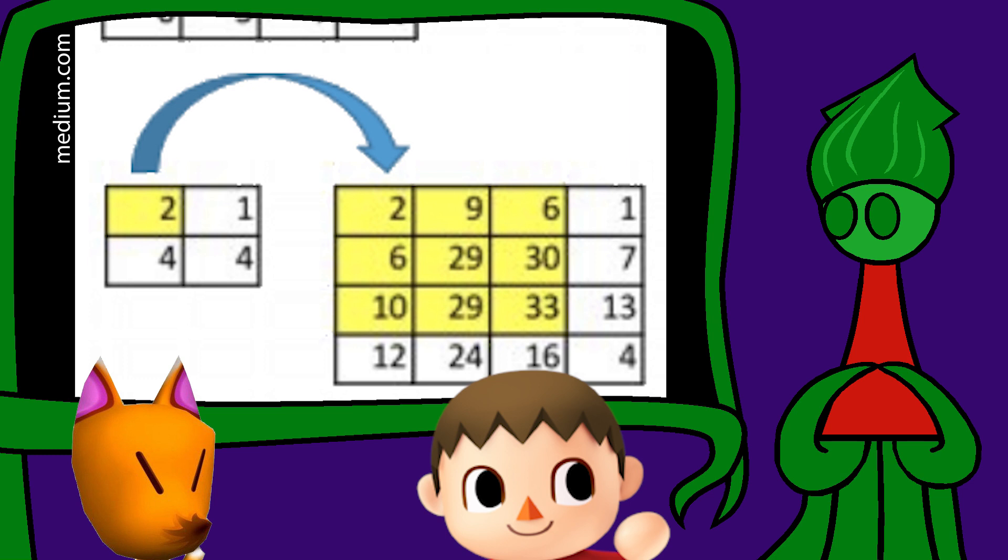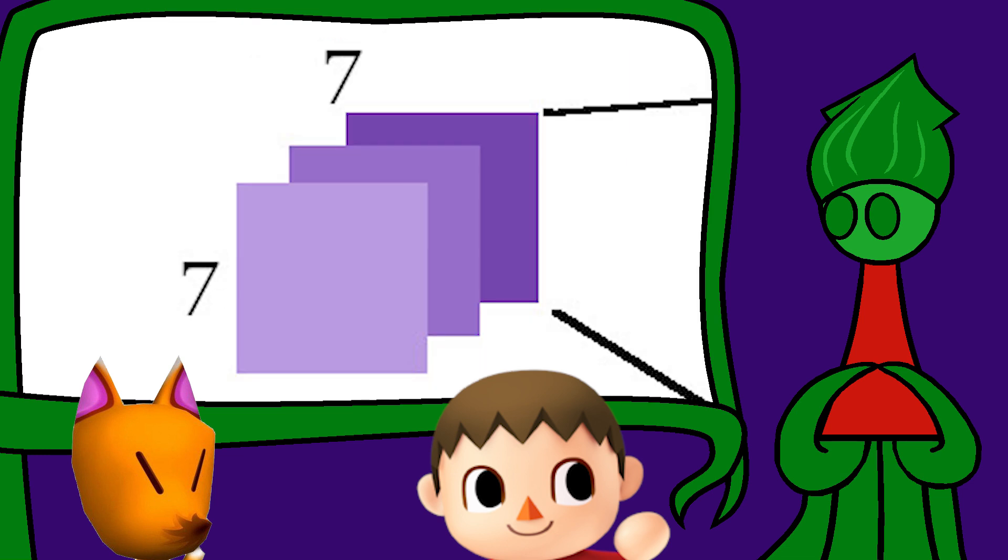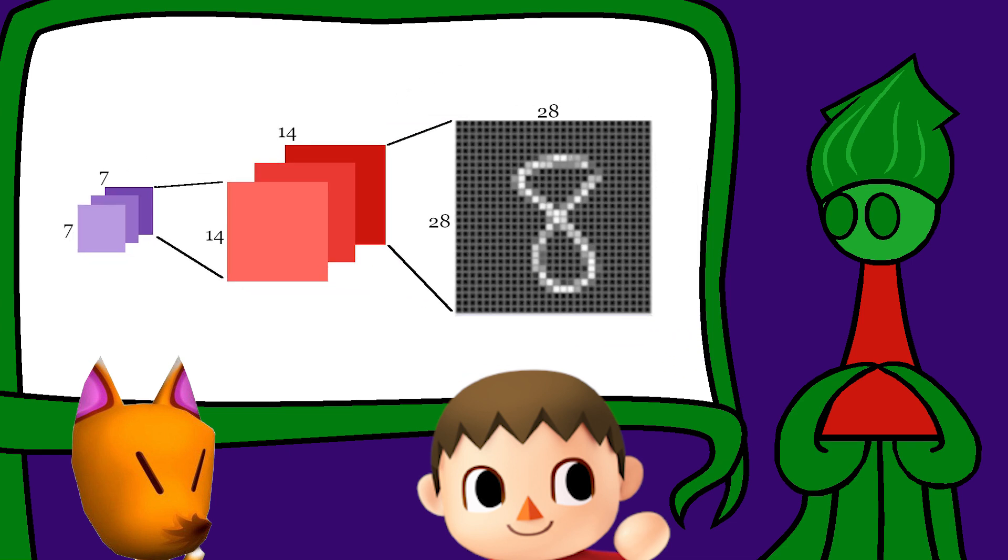In transpose convolution, strides make the image bigger instead of smaller, a process called upsampling. The generator goes from 7 by 7 to 14 by 14 to 28 by 28.